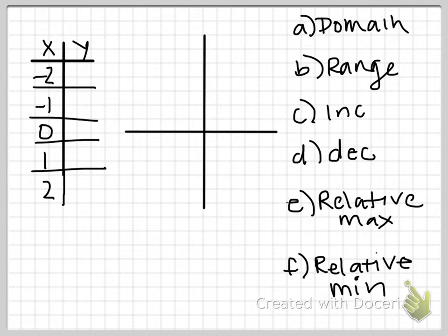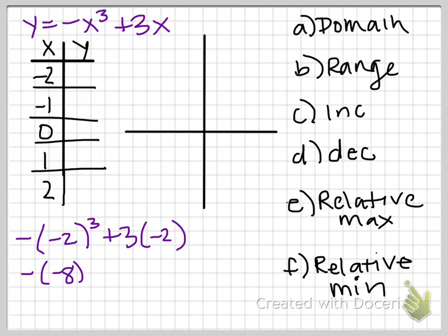So our next equation is y equals negative x cubed plus 3x. And again, you just need to substitute these values in. So I'll have negative of a negative 2 cubed plus 3 times negative 2. Negative 2 cubed will be negative 8. And over here, this will become minus 6. This double negative will become positive 8 minus 6, which is 2.